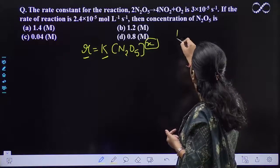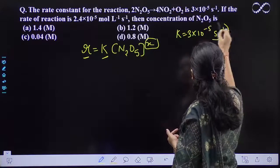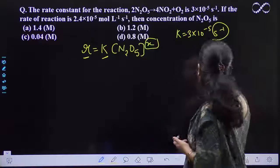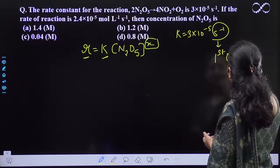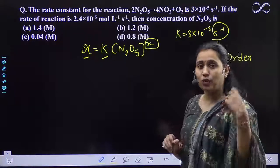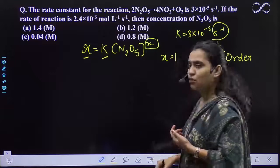The value of K that is provided to you is 3×10^-5 s^-1. s^-1 is the value for the first order reaction. Now since it is a first order reaction and you have only one type of reactant, so X is equal to 1.